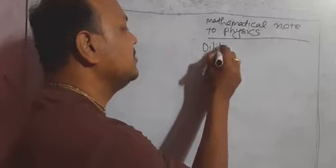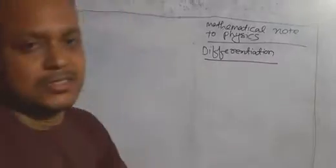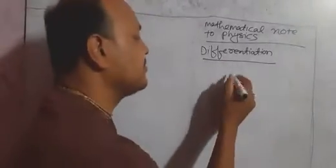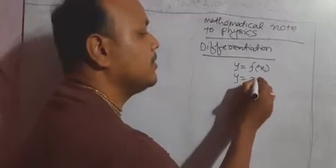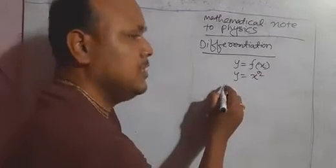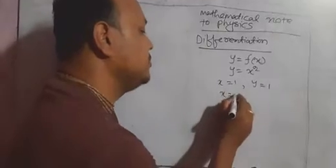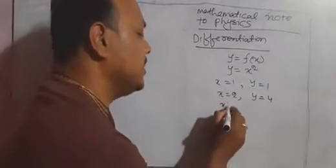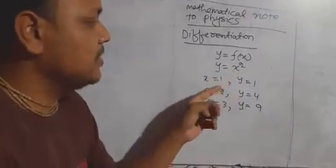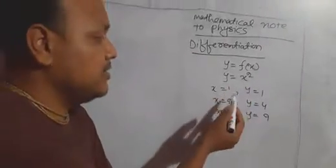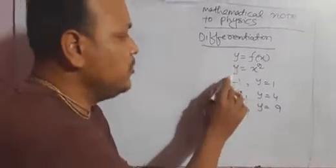The mathematics that is called differentiation — let us discuss differentiation. Consider y equal to function of x. For example, y equal to x square. If we take x equal to 1, then the value of y becomes 1. If we take x equal to 2, then the value of y becomes 4. If we take x equal to 3, then the value of y becomes 9. So for different values of x, there are different values of y. We can put the value of x arbitrarily: 1, 2, 3, 4, anything. But the value of y cannot be independent — the value of y depends on x.